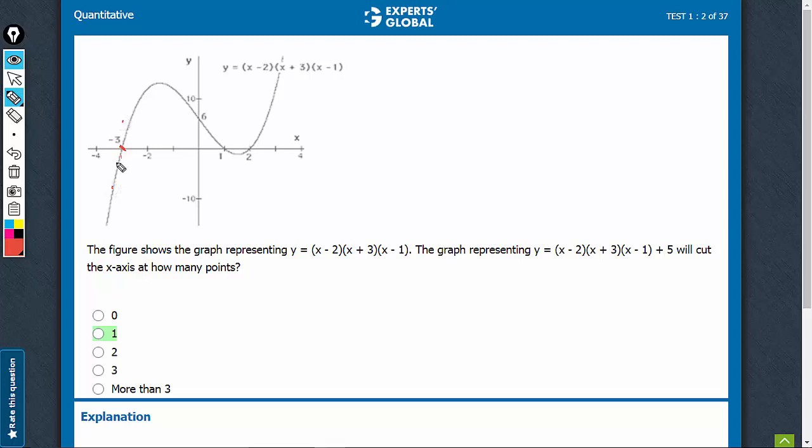Similarly, for this point, the graph will shift itself up by 5 points. So the entire graph will shift by 5 points, and the peak will also shift up by 5 points, and